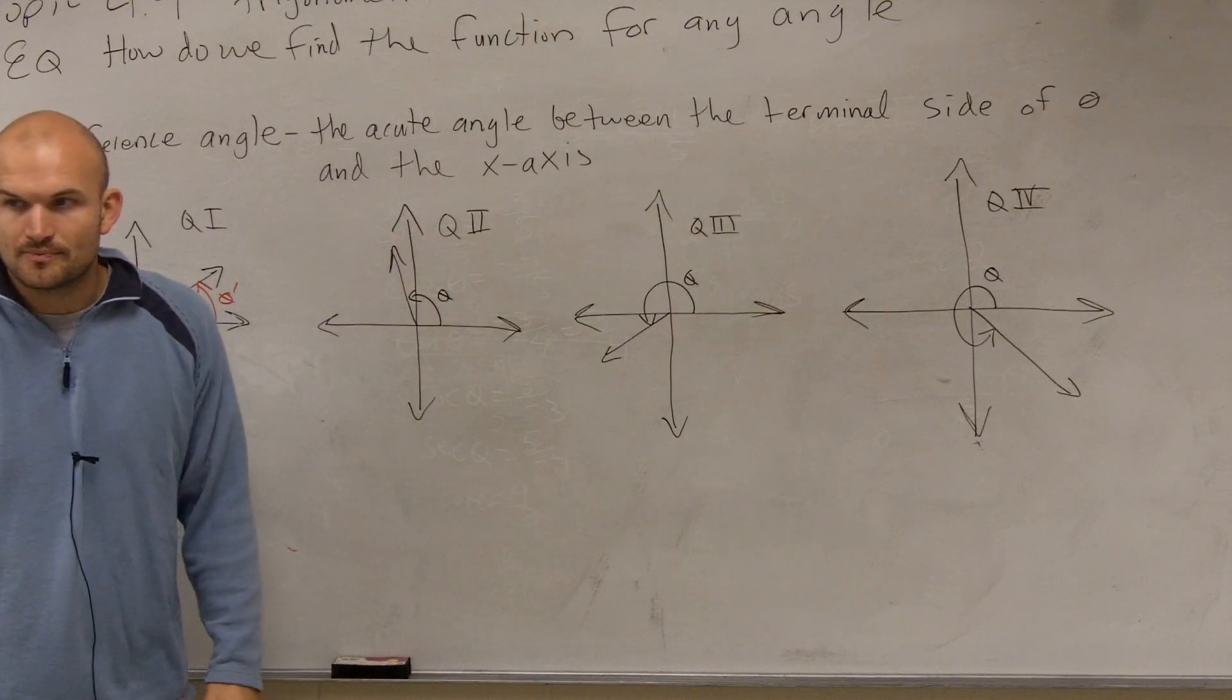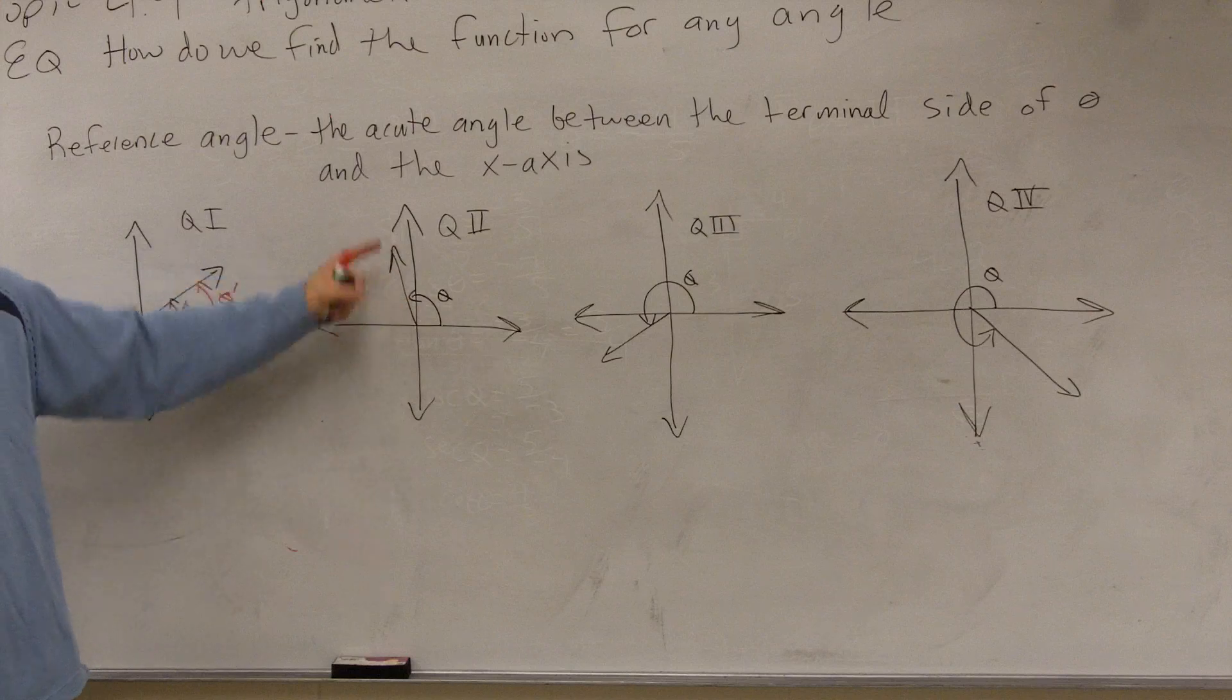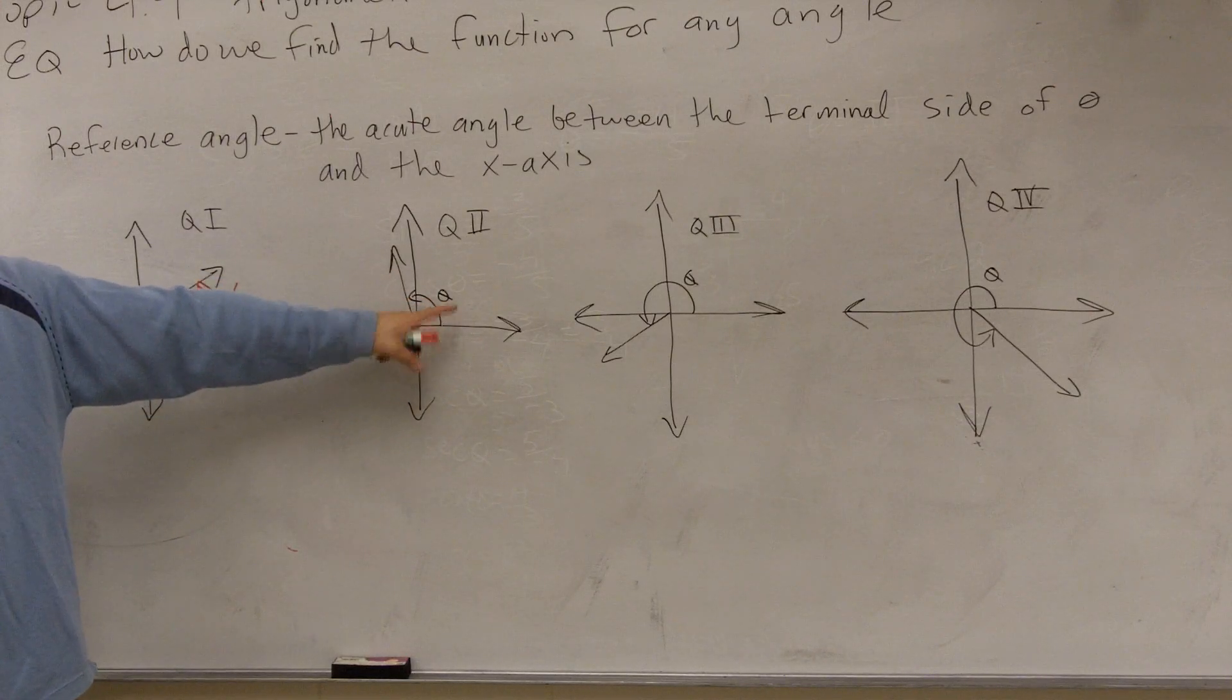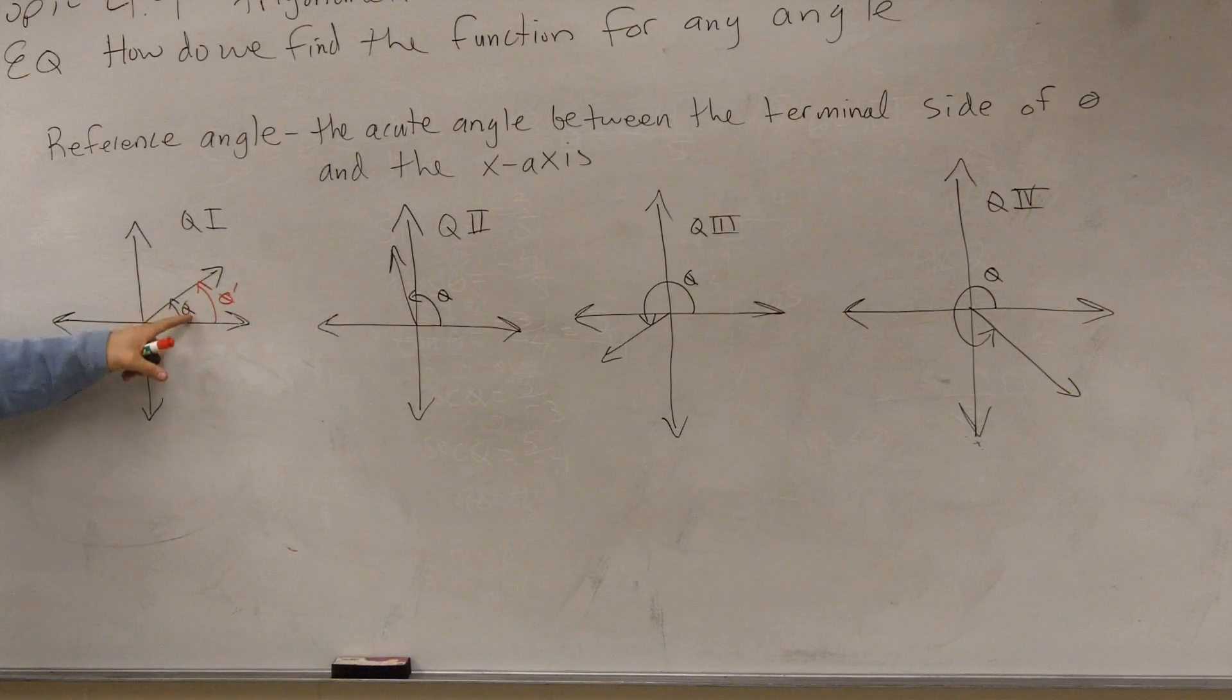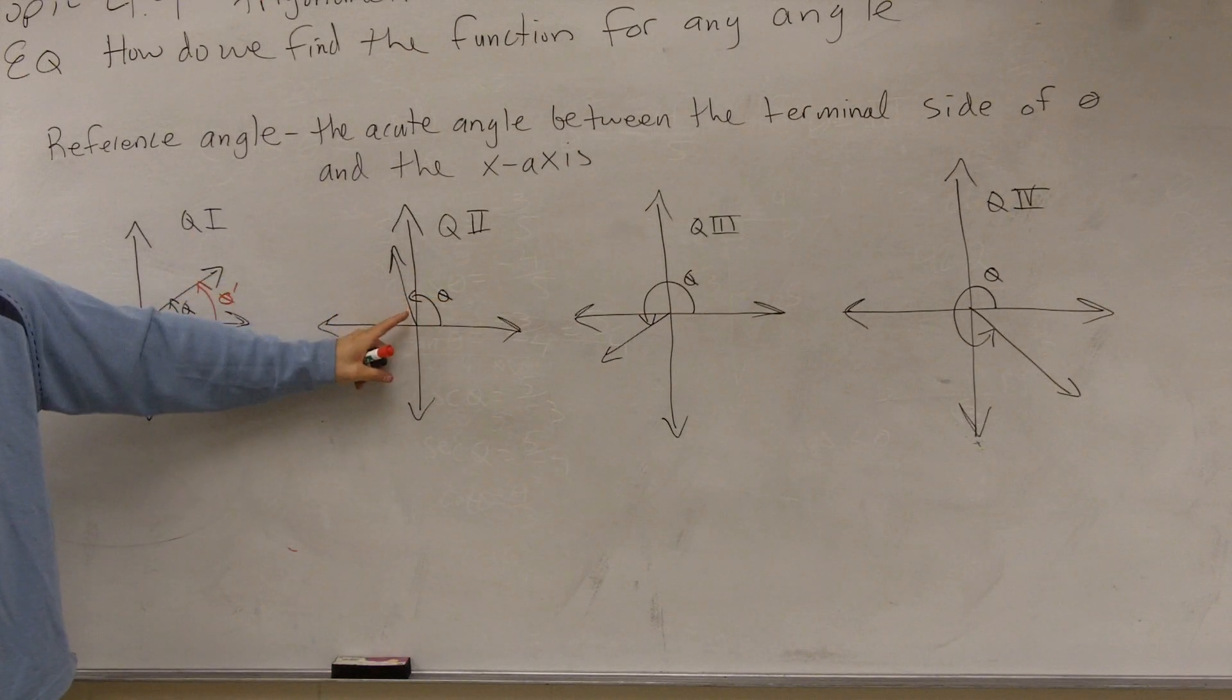Now let's look at quadrant two. If I have an angle in quadrant two where my terminal side is in quadrant two, can it be the same angle like this one? See, here in quadrant one they're the same angle. But if I said this was the same angle, no, because that's not acute, right? Acute has to be between 0 and 90.